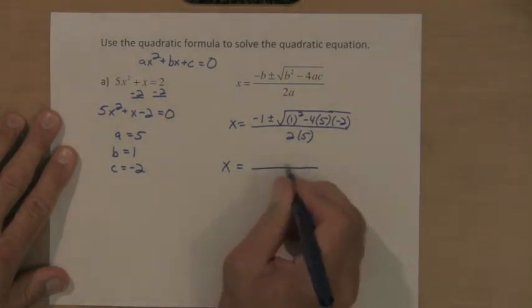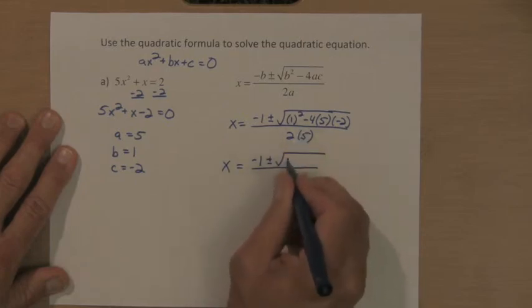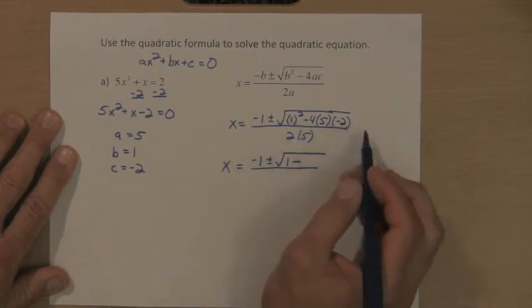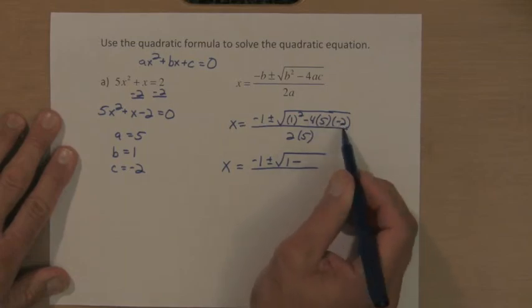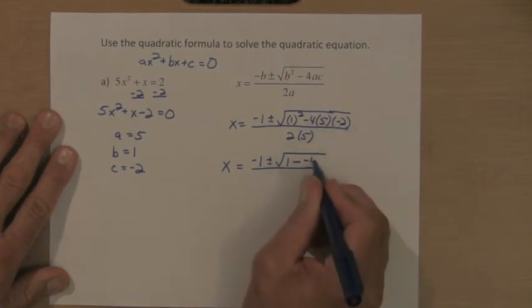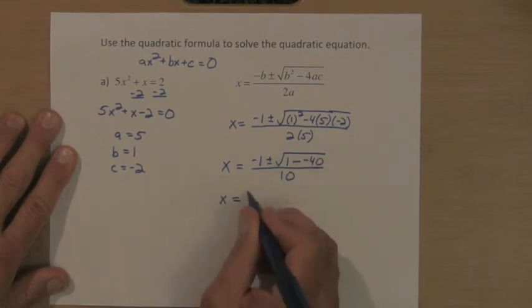So let's take care of what's under that square root. To recopy the negative 1, I have a 1 squared is 1, and I have minus, and be careful with this part, four times 5 is 20, times a negative 2 is negative 40. So I have minus a negative 40 under the square root, and a 10 under the fraction bar.